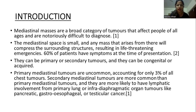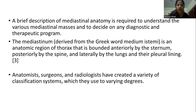Mediastinal masses are a broad category of tumors that affect people of all ages and are notoriously difficult to diagnose. The mediastinal space is small and any masses that arise from there will compress the surrounding structures, resulting in life-threatening emergencies. These can either be primary or secondary tumors and they can be congenital or acquired. Primary mediastinal tumors are uncommon, whereas secondary mediastinal tumors are more common and are more likely to have lymphatic involvement from primary lung or intra-diaphragmatic organ tumors.